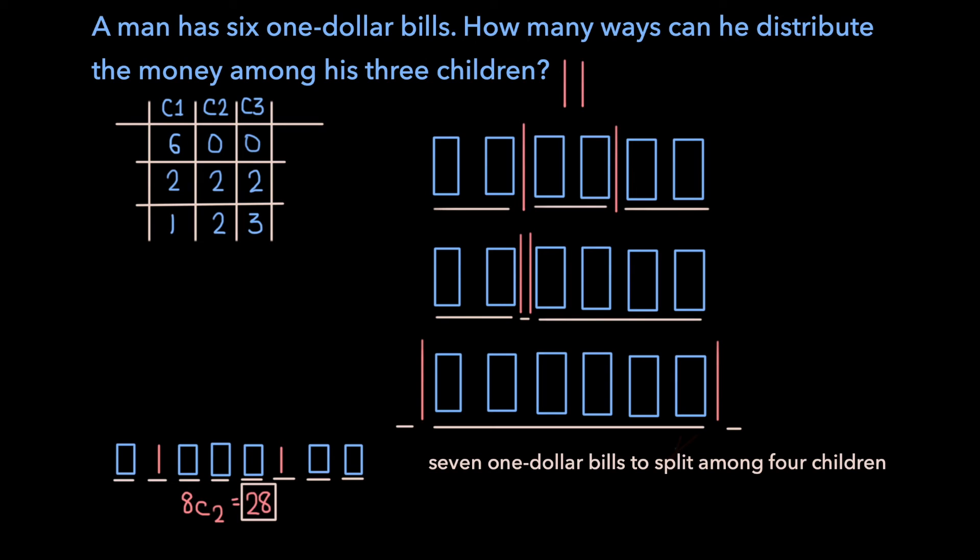In which we have seven one-dollar bills to split among four children. Now, since there are four children to split the money amongst, we're going to need three dividers, which we want to abbreviate with the letter D. This means that we now have 10 slots, seven for the one-dollar bills, and three for the dividers.